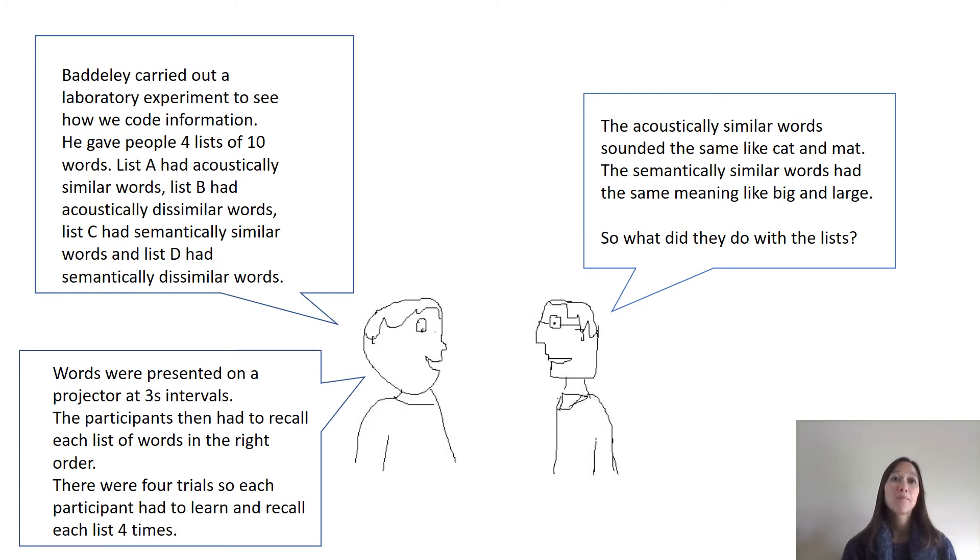Baddeley carried out a laboratory experiment to see how we code information. He gave people four lists of ten words. List A had acoustically similar words, list B acoustically dissimilar, list C semantically similar, and list D semantically dissimilar words.